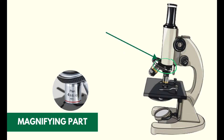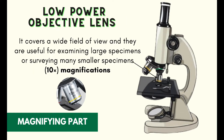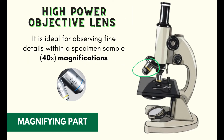The lower power objective lens covers a wide field of view and is useful for examining large specimens or surveying many smaller specimens. It has 10 times magnification. The higher power objective lens is ideal for observing fine details within a specimen sample. It has 40 times magnification.